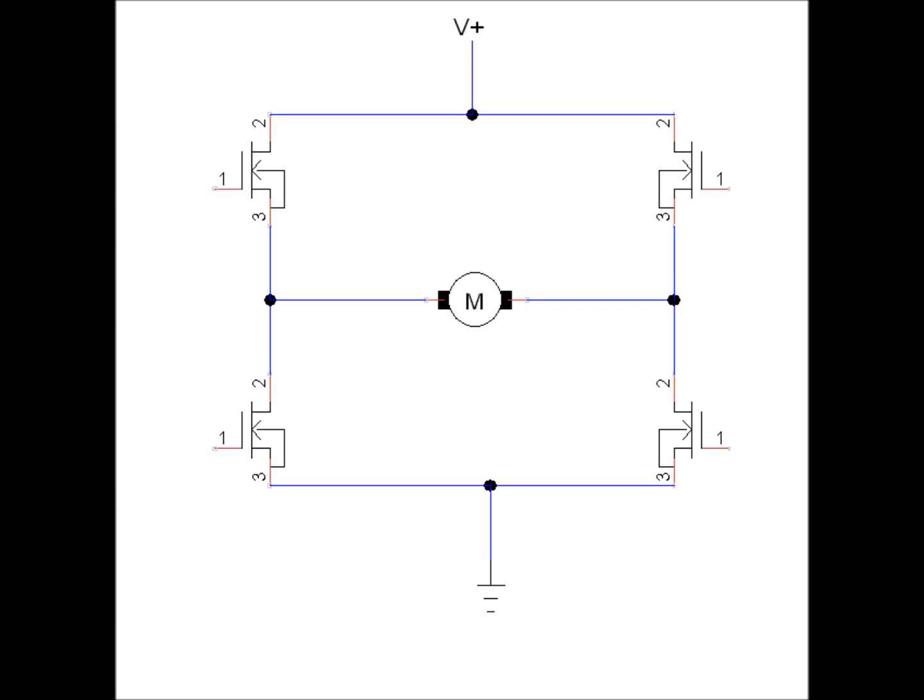The first mode of operation is to run the motor in the forward direction, and this can be accomplished by turning on this transistor and this transistor and leaving this transistor and this transistor off. This essentially lets power flow from your positive terminal through this transistor, through the motor in this direction, back through this transistor, and then to ground.